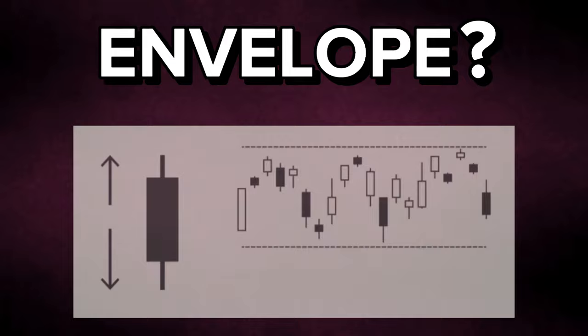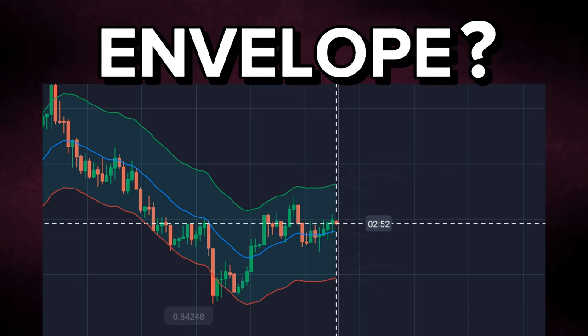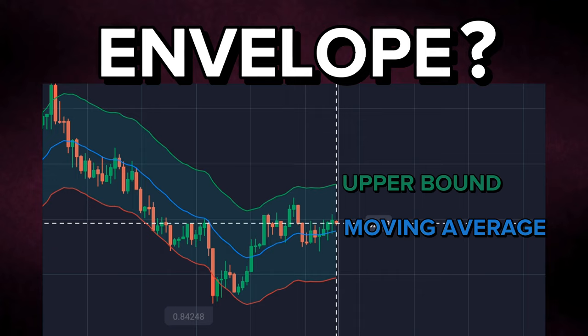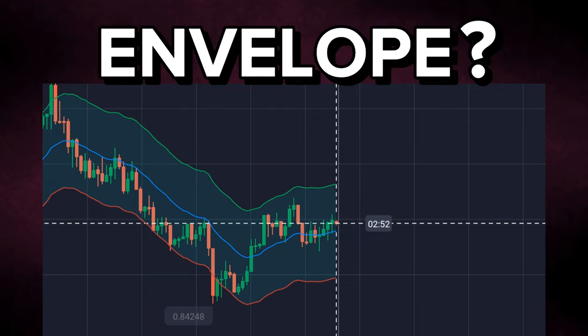What is an envelope? Envelopes are technical indicators which help us to identify trading ranges. It consists of three lines: the middle line is the moving average, the line above the moving average is the upper bound, and the line below the moving average is the lower bound. These two bounds always move parallel to the moving average.